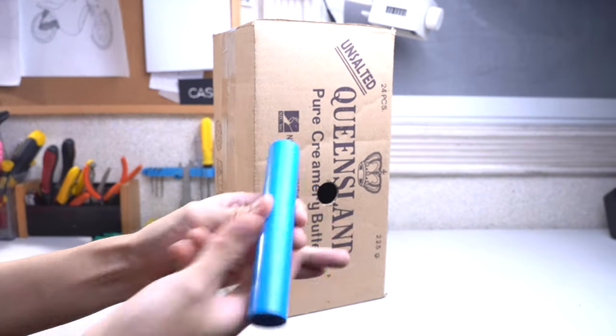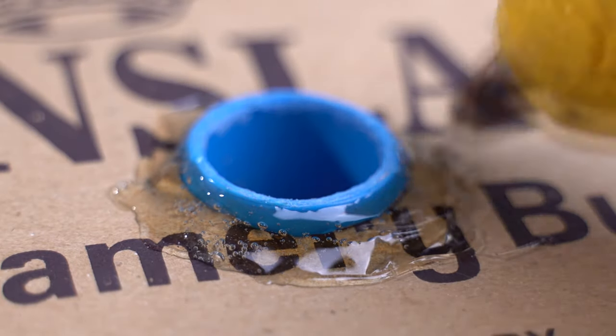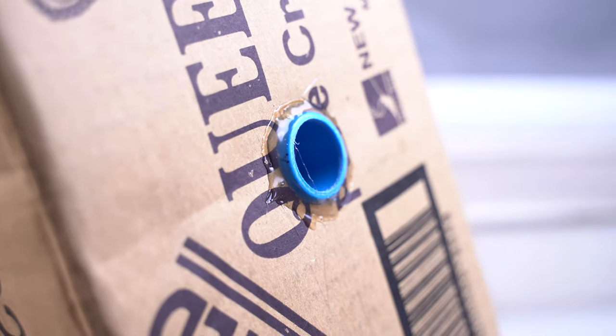Now grab a 1-inch PVC pipe and carefully insert it through the box. You can use hot glue to secure it in place. Then do the same thing for the other side.